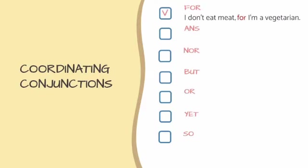Let's look at examples using 'for' as a conjunction. Note that 'for' in this context means 'because.' So the sentence 'I don't eat meat, for I am vegetarian' means 'I don't eat meat because I am a vegetarian.'